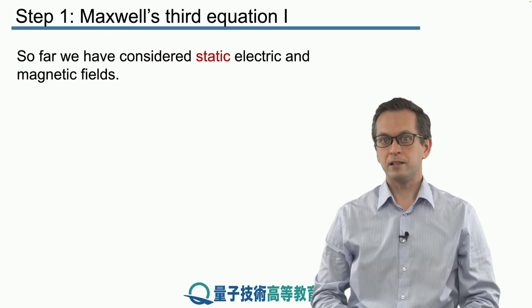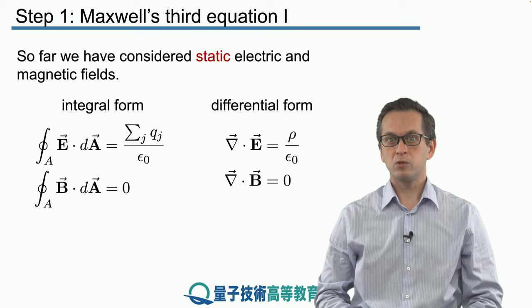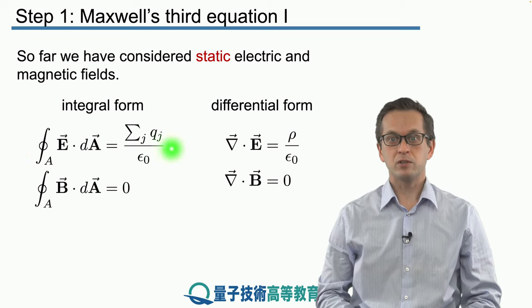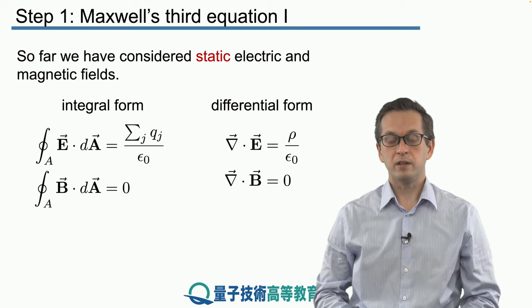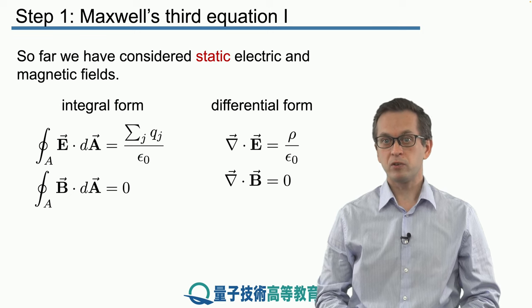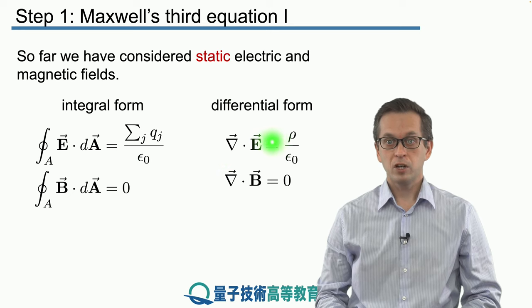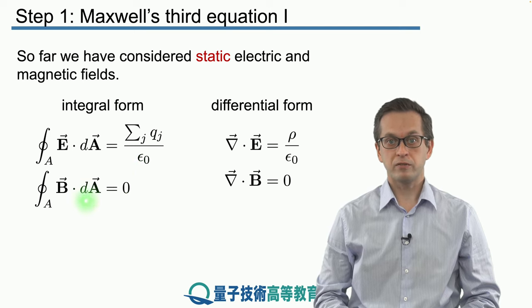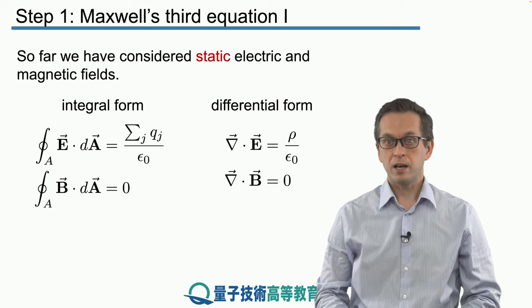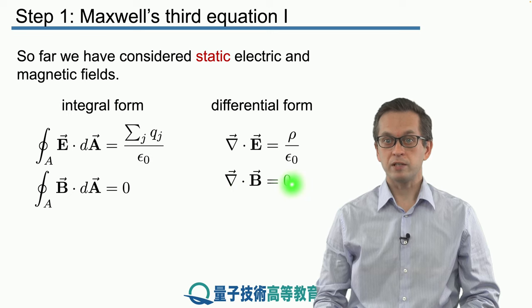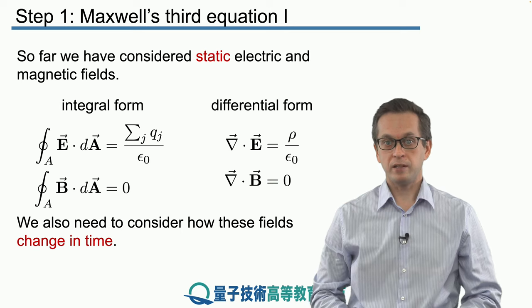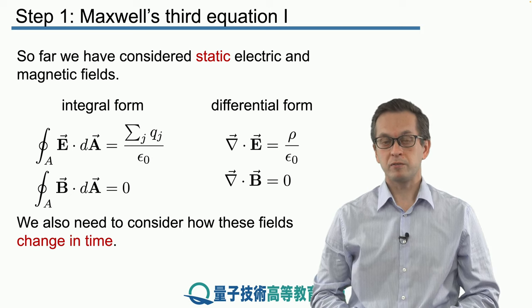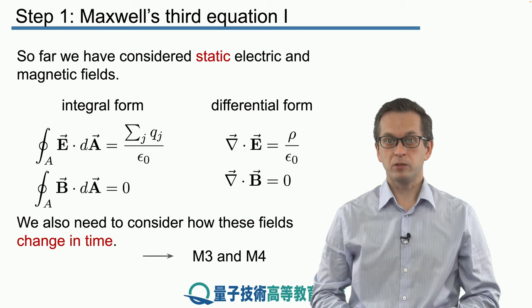In the previous lesson we saw how static electric and magnetic fields behave. We derived two Maxwell's equations: the first relating the flux of an electric field through an enclosed area to the sum of charges within that area, and its differential form relating the divergence of the electric field to charge density. Similarly for the magnetic field, the flux through an enclosed surface is always equal to zero because there are no magnetic monopoles. But there is no time dependence in these equations, so this is the job of the last two Maxwell's equations.